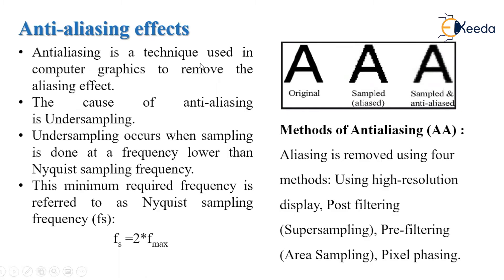Anti-aliasing is a technique used in computer graphics to remove the aliasing effect. The cause of aliasing is undersampling, which results in the loss of information of the picture. To avoid this loss, we need to have our sampling frequency at least twice that of the highest frequency occurring in the object. Undersampling occurs when the sampling is done at a frequency lower than the Nyquist sampling frequency, which is the minimum required frequency.